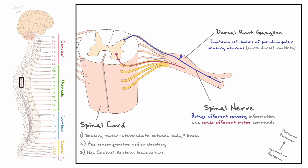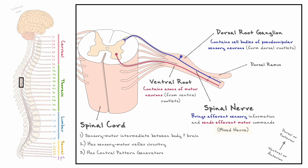When we consider efferent motor information, the cell bodies of the motor neurons originate in the spinal cord and leave via ventral rootlets to reach a structure known as the ventral root before joining sensory afferents in the spinal nerve. Because the spinal nerve ends up carrying both afferent and efferent information, it is also referred to as a mixed nerve. You might have noticed that the spinal nerve splits in two: the dorsal portion is called the dorsal ramus, and the ventral portion is called the ventral ramus.